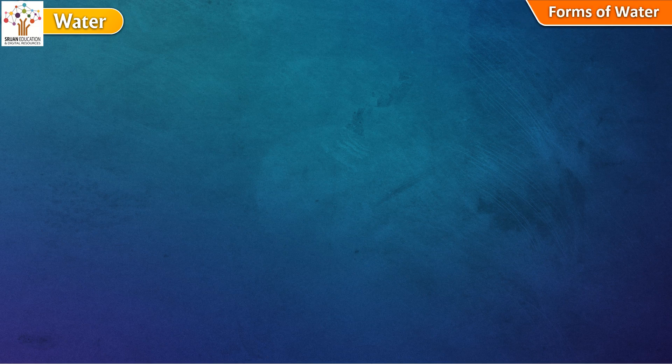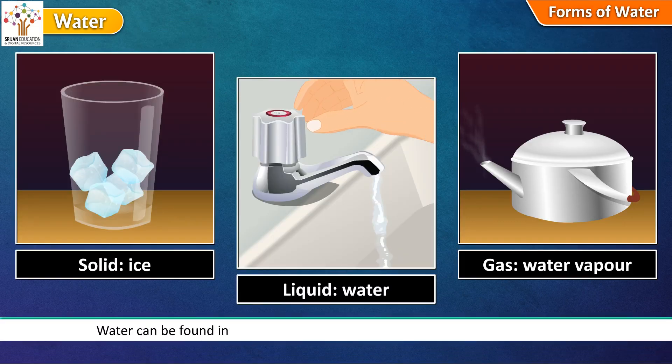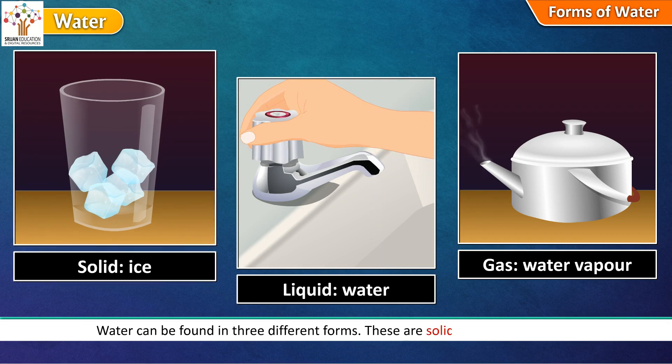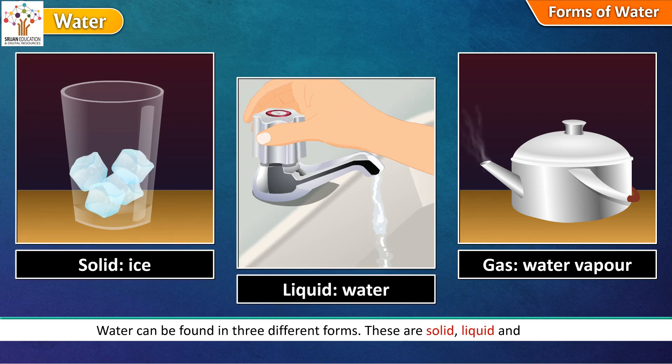Forms of water. Water can be found in three different forms. These are solid, liquid and gaseous.